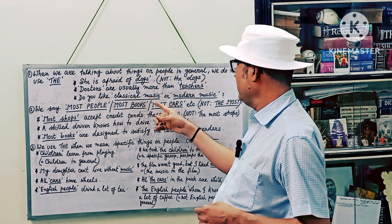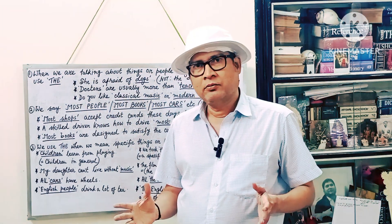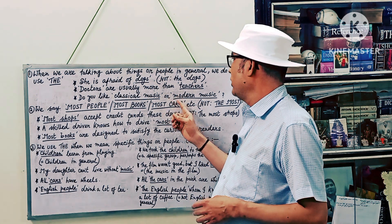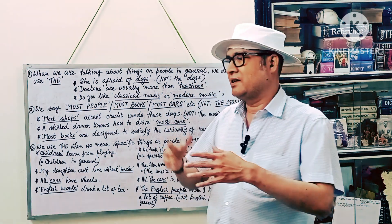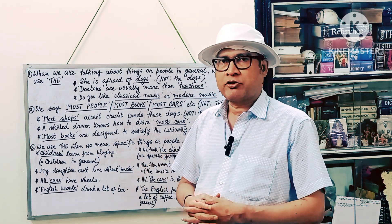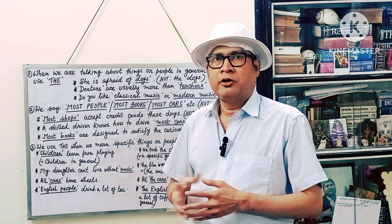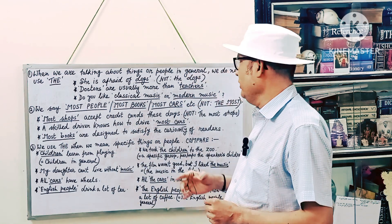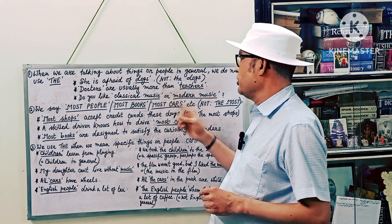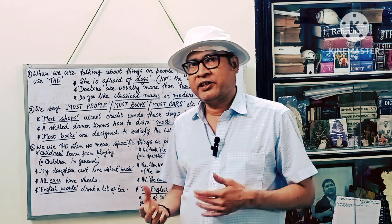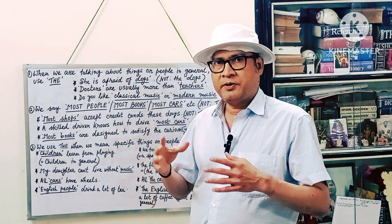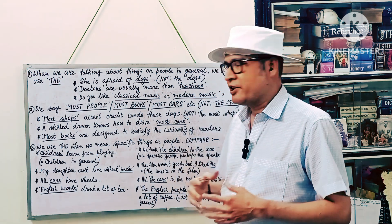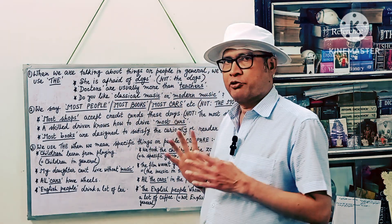Third example: "Do you like classical music or modern music?" Classical music — all sorts of classical music. That's why we are not using "the classical music". We are also saying "modern music". But if you say "I like the modern music", that means you are talking about a particular group of musicians, some specific band or group of musicians. For example, "the classical music played by Ravi Shankar" — so we are specifying there. We are talking about the music created by Pandit Ravi Shankar. Otherwise, "do you like classical music or modern music?" — no "the".